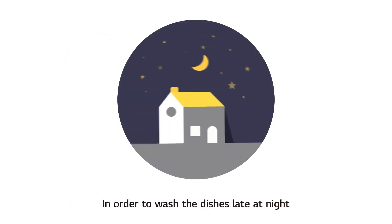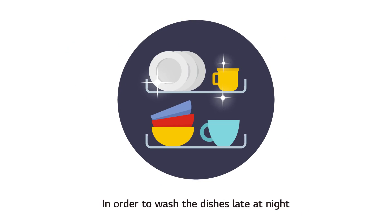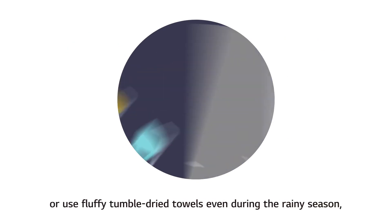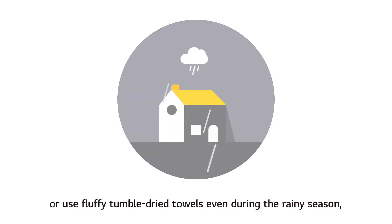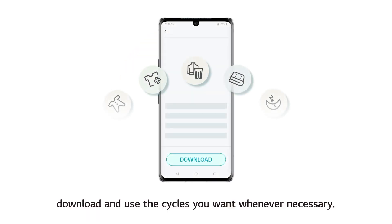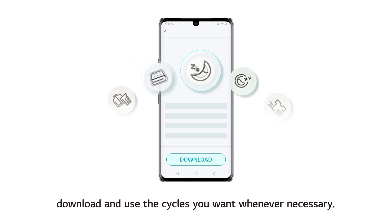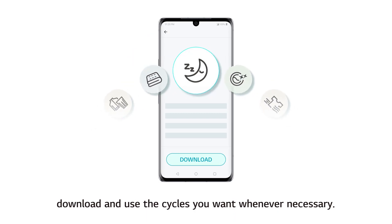In order to wash the dishes late at night or use fluffy tumble-dried towels even during the rainy season, download and use the cycles you want whenever necessary.